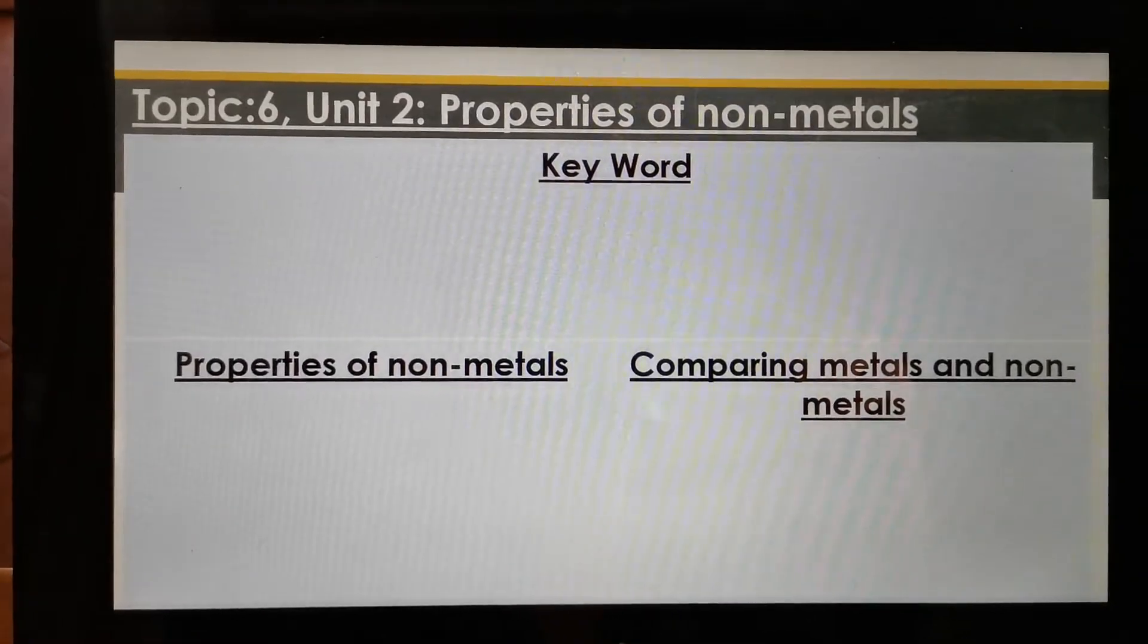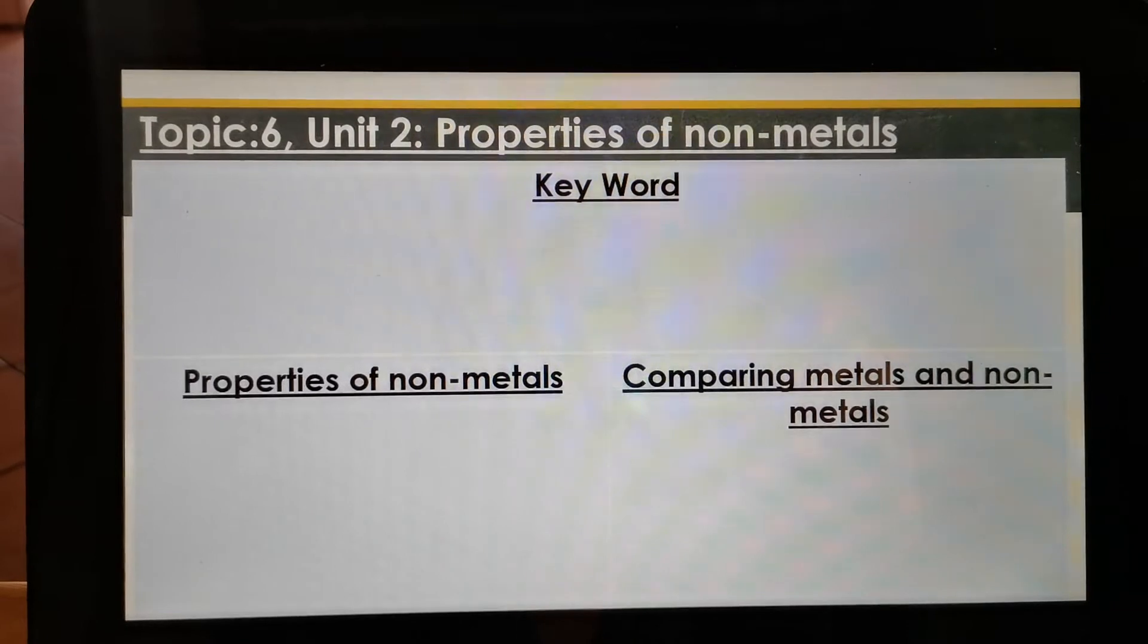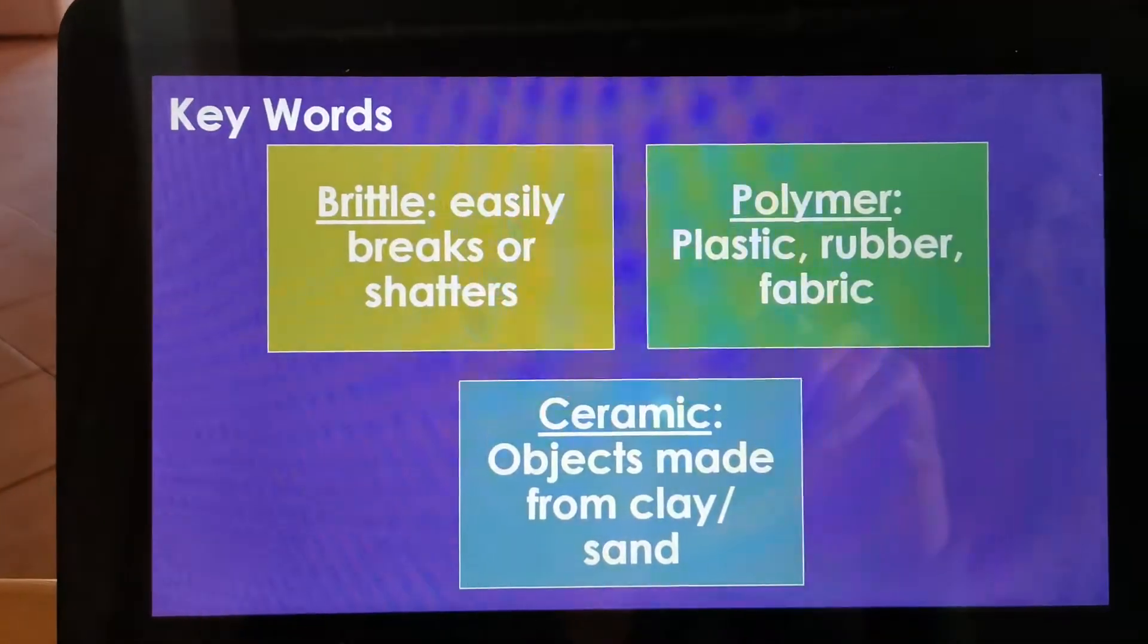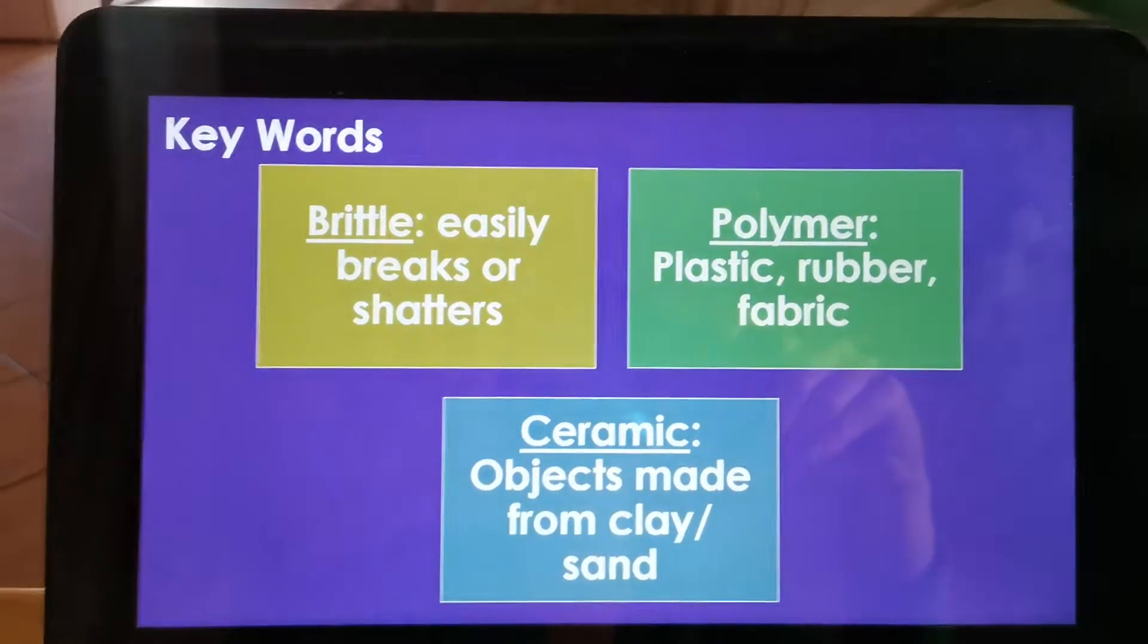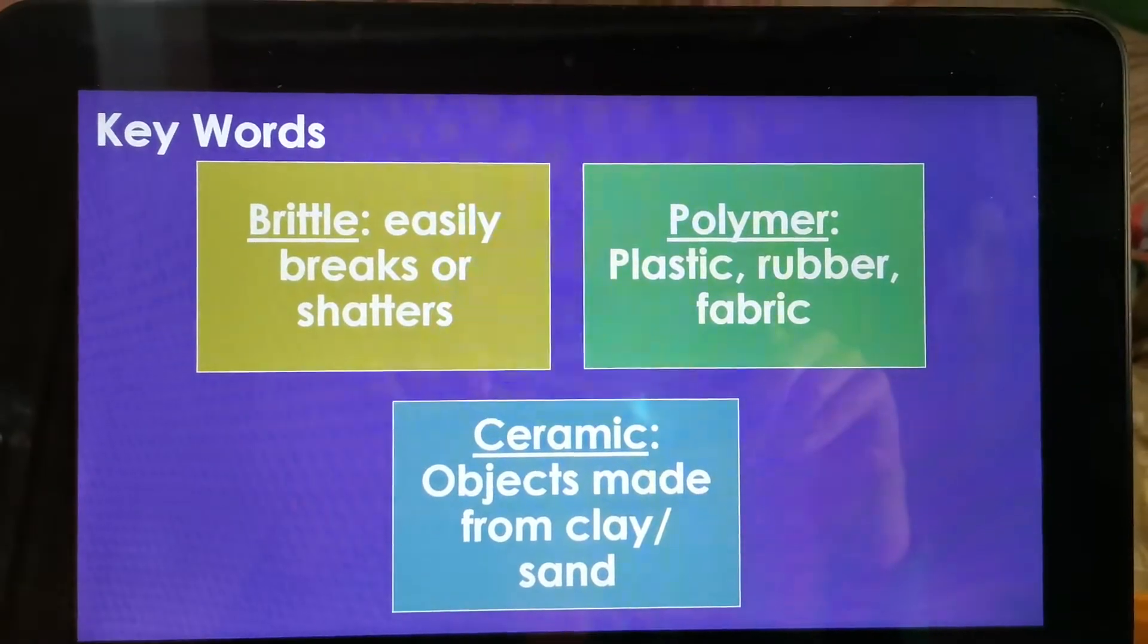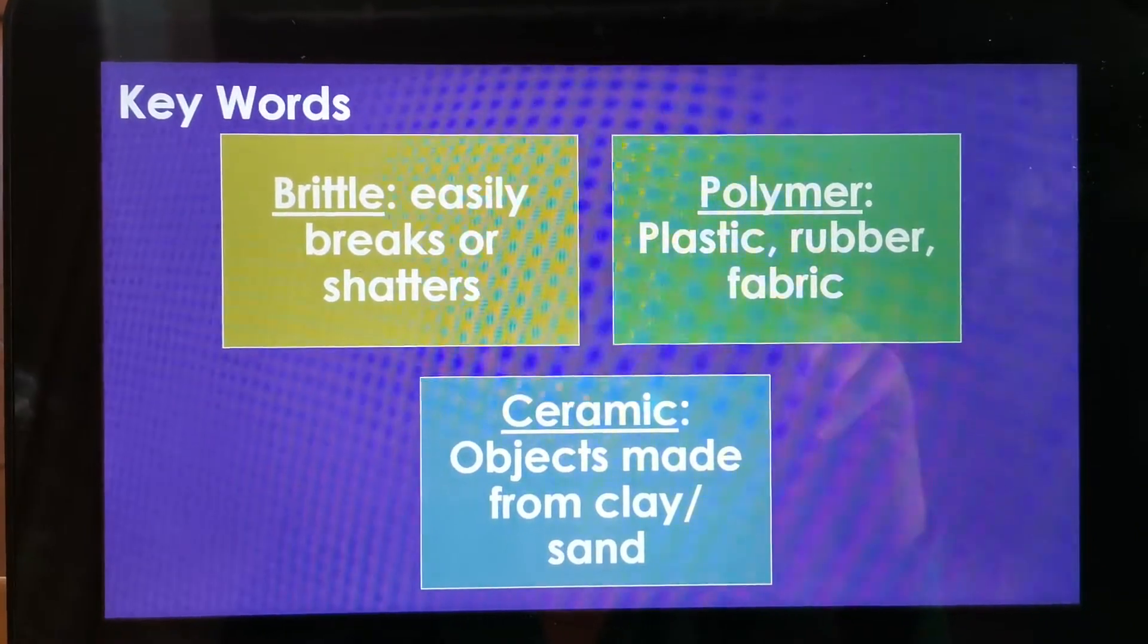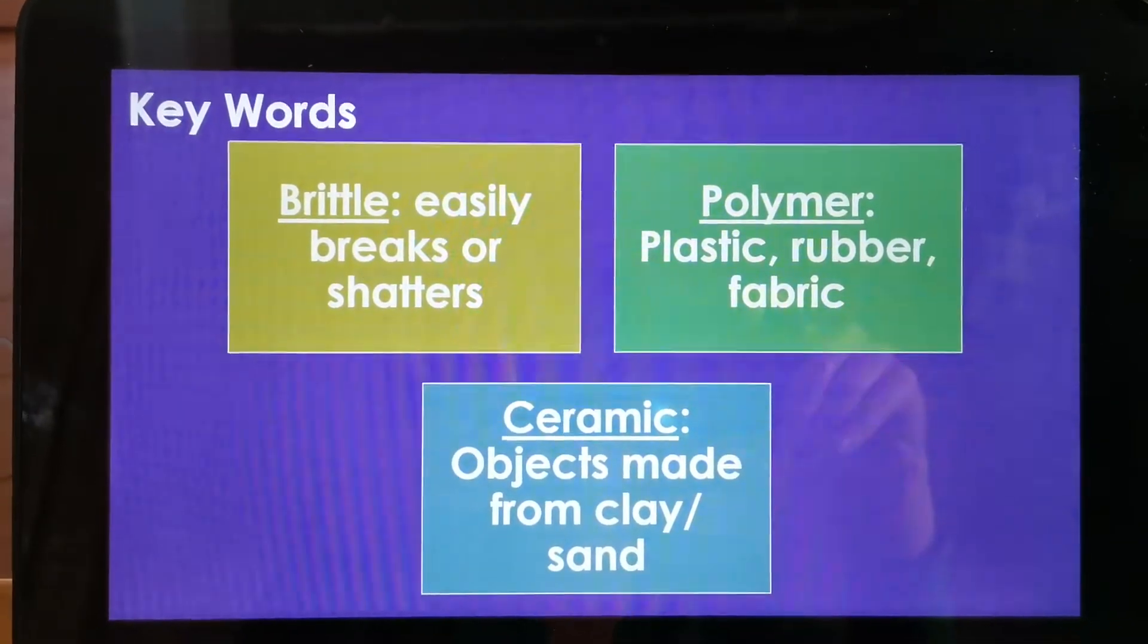We're quickly going to look at our keywords, we're going to look at Properties of Non-Metals, and we're going to compare Metals and Non-Metals. So let's quickly look. There's three keywords. Brittle. Brittle is when something breaks easily or it shatters. For example, if you throw a glass on the floor, it will break in million little pieces, and that is when it shatters. So a glass is brittle.